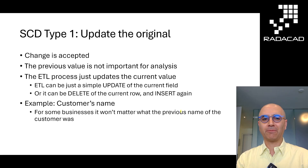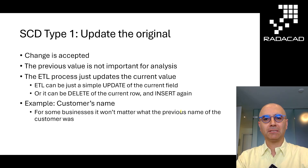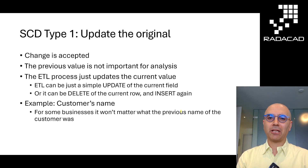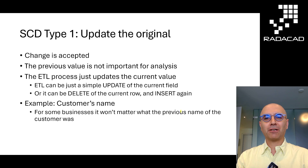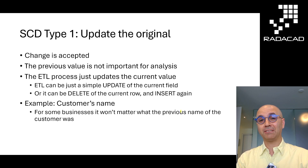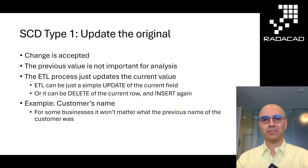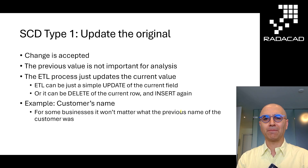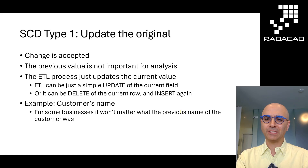Another type of SCD — SCD Type 1, which is one of the most common types — is that you update the original value. For example, a customer name previously was Alex and then it changed to Reza, and you just update the value. You don't care what the previous name of the customer was. In a scenario like this you just update the value, or you can delete the record and insert a new one, which is exactly the same thing. This is one of the most common types because you're probably already doing it without even knowing it. Most ETL processes delete the data in the dimension table and load it again — which basically means update the original value — and that is SCD Type 1.